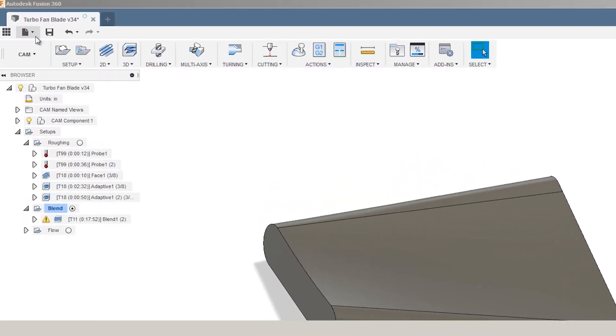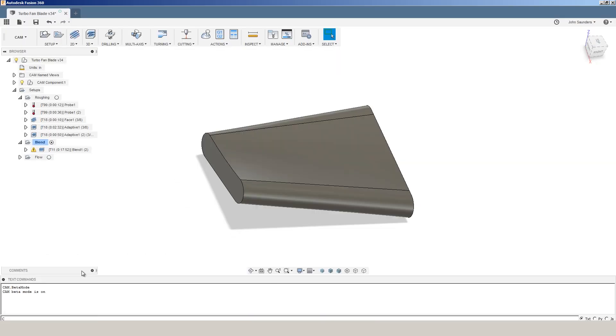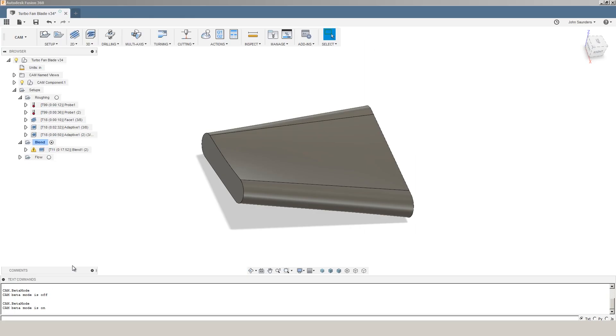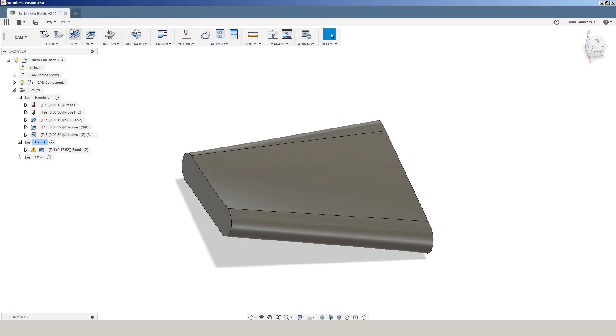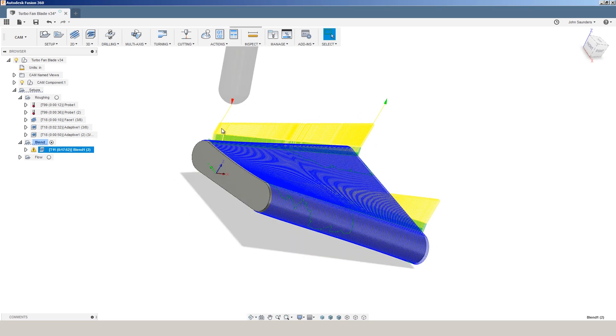And if you're looking at your 3D toolpath and you don't see blend, go to the drop-down menu, view, view, show text commands, and type cam.betamode slash on. And when you close Fusion, it will automatically turn itself off, so you have to turn it back on. Or if you want to turn it off, you can type cam.betamode slash off. But putting yourself in beta mode will reveal this blend toolpath. And again, that's what we use. Card here to the NYCCNC page for this project where we'll have a copy of this file.